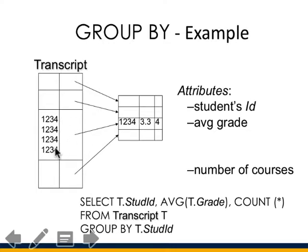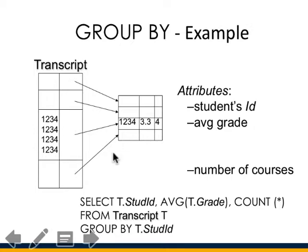For a transcript table example, you might want to find the average grade and number of courses per student. You write SELECT student_id, AVG(grade) AS CGPA, COUNT(*) FROM transcript GROUP BY student_id. Since student_id appears in the SELECT but is not inside an aggregate, it must also appear in the GROUP BY — same attribute, same list.